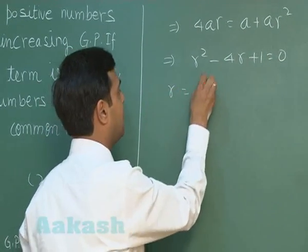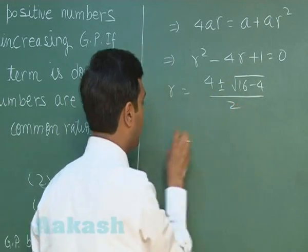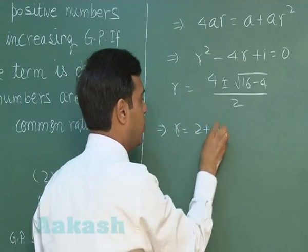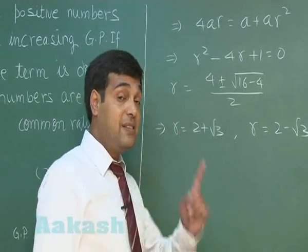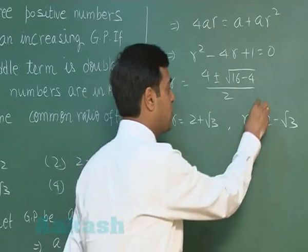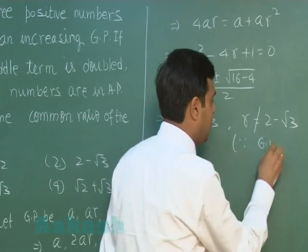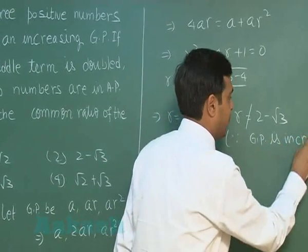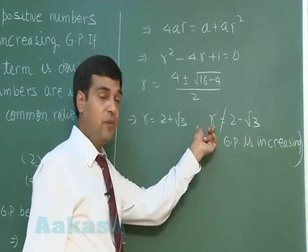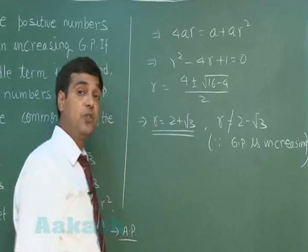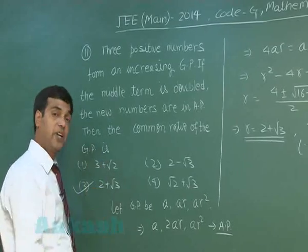Solving, we get 4 plus minus root 16 minus 4 divided by 2, that is r equals 2 plus root 3 or r equals 2 minus root 3. Since the question is talking about increasing GP, so common ratio cannot be less than 1. Since GP is increasing, so common ratio should be greater than 1. Hence, the required result is 2 plus root 3 as the common ratio of given GP. From the given options, option number 3 is correct.